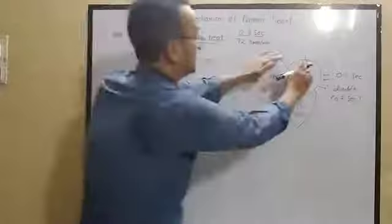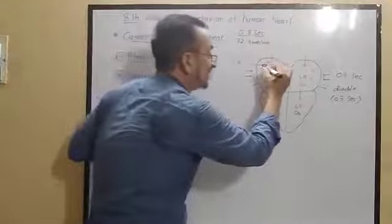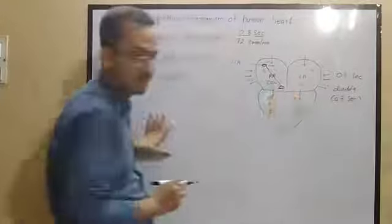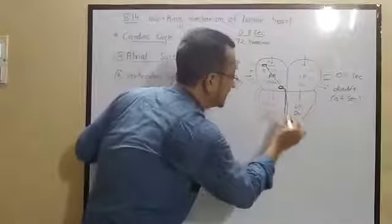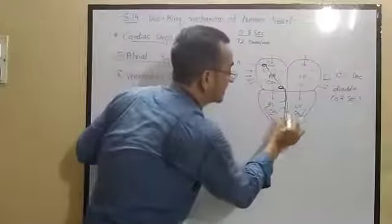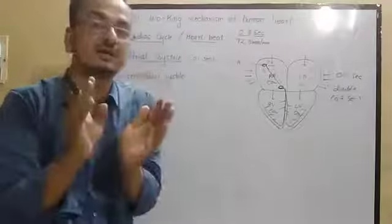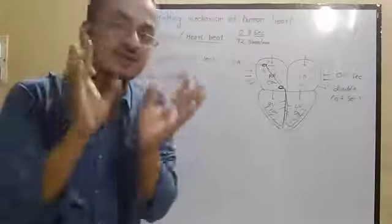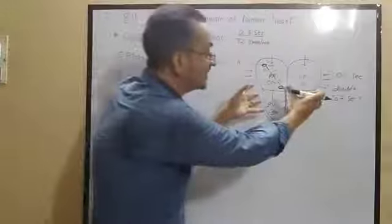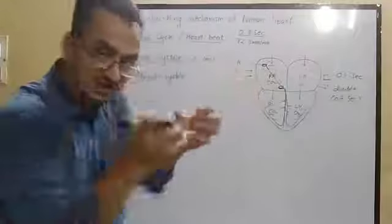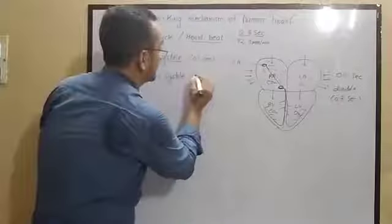Meanwhile, blood has moved down from the atria, and the impulse generated by the SA node has traveled to the AV node, then to the bundle of His, and then distributed into the Purkinje fibers throughout both ventricular walls. Both ventricular walls become fully depolarized, and both ventricles contract simultaneously — this is called ventricular systole, which lasts for 0.3 seconds.